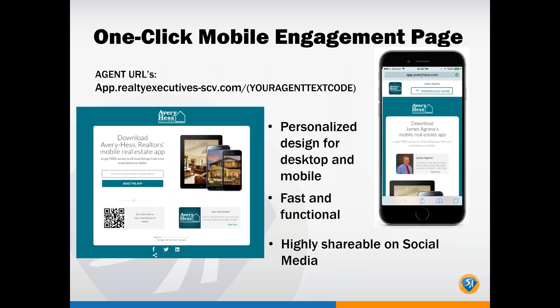The engagement page URL starts with app.averyhuss.com forward slash your text code. There are two versions — personalized for desktop and mobile. The desktop version requires you to enter a phone number or email address to send the download link. If you're viewing it on mobile, you can just click 'Download Now' to start the download process directly.